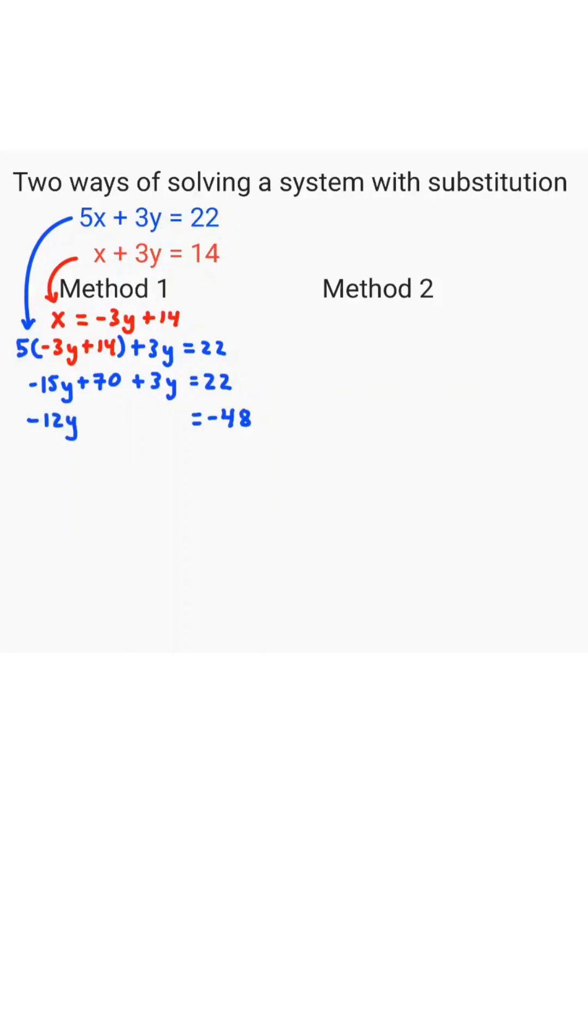Combine like terms and subtract 70 both sides, we get negative 12y equals negative 48. Divide both sides by negative 12, we get y equals 4.